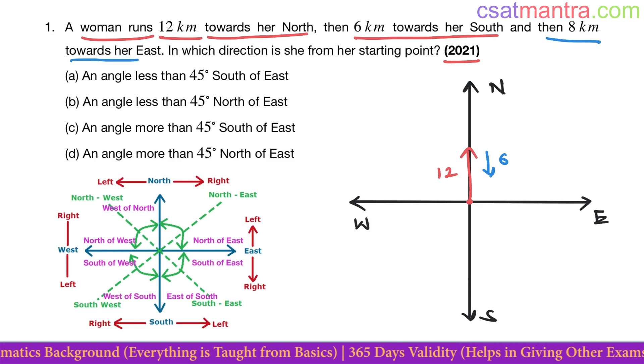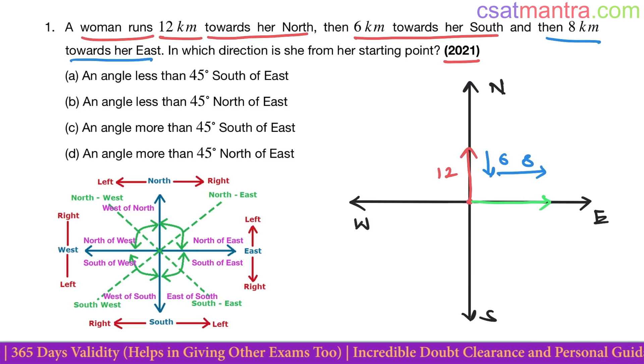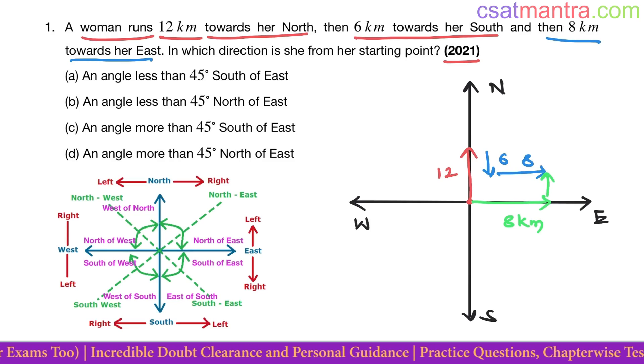And then 8 kilometers towards her east. Now tell me, in the east direction, how far is she from her starting point? 8 kilometers. And in the north direction, how far is she? 6 kilometers. So she is at this point.